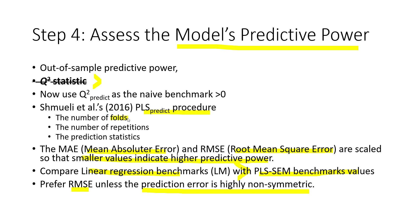Each fold is a partition of our sample, and it is important that each fold fulfills the minimum data requirement. The number of repetitions determines how many times the PLS Predict procedure is run before results are compiled. Two prediction statistics are used: MAE (mean absolute error) and RMSE (root mean square error). RMSE is preferred most of the time unless the prediction error is highly asymmetric. Smaller values for these statistics indicate higher predictive power.